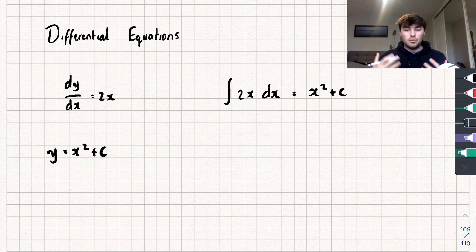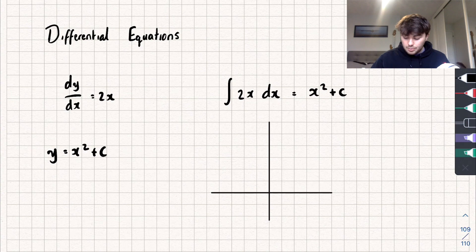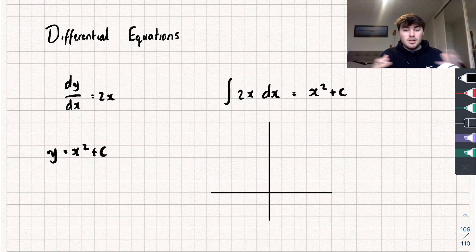We call it the general solution. In some questions you'll be asked to sketch a family of solutions. To do that we'll take a simple graph and I'm going to sketch a few different values of c on there. When c equals 0 we want to sketch y equals x squared, when c equals 1, when c equals negative 1...